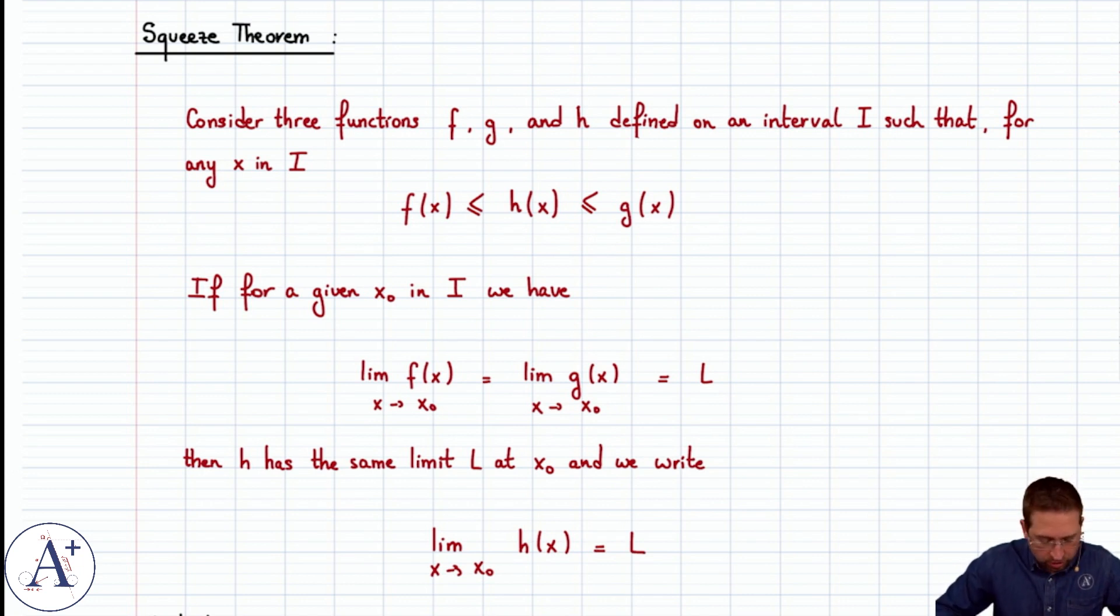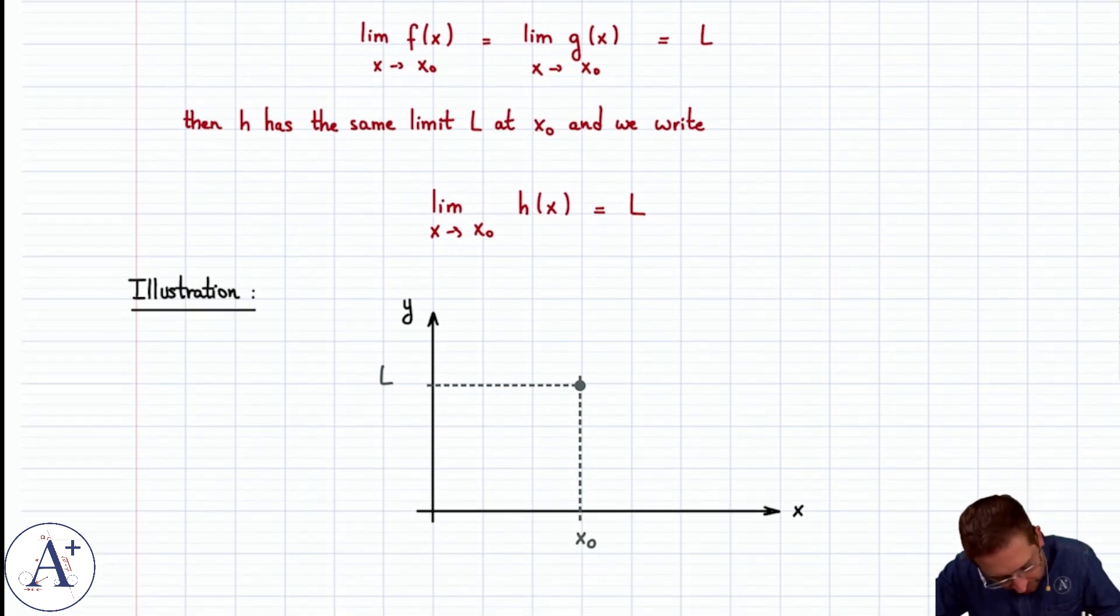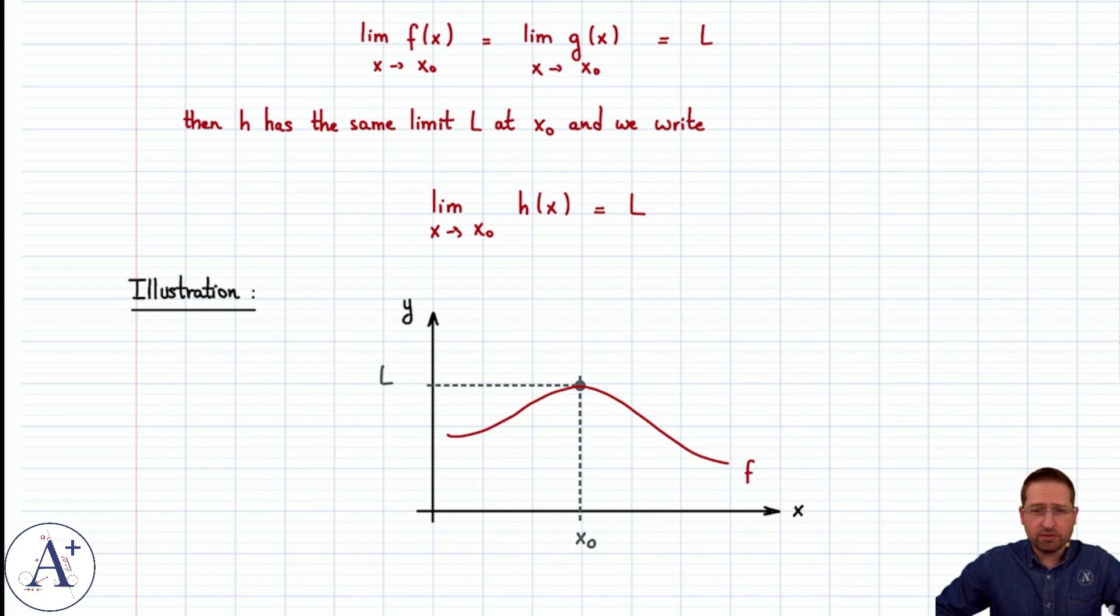Graphically, it's actually pretty easy to visualize. If we have a function f that has a limit L at x-naught, and g is always above f, well the graph of g is always above the graph of f. But g also has a limit L at x-naught.